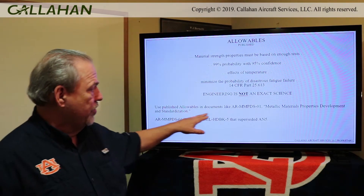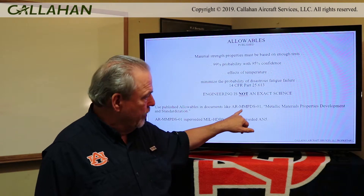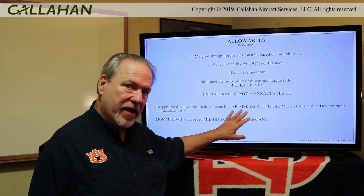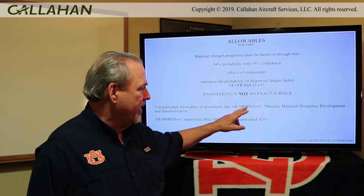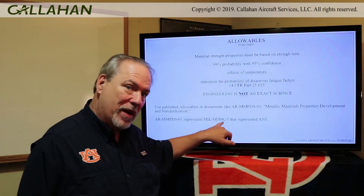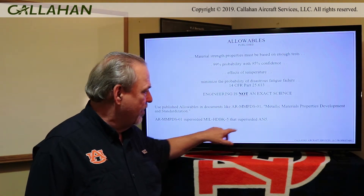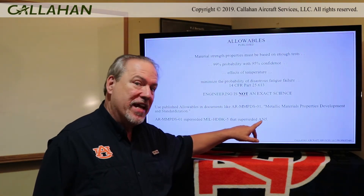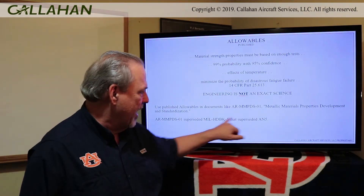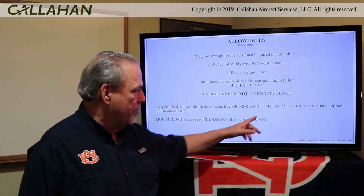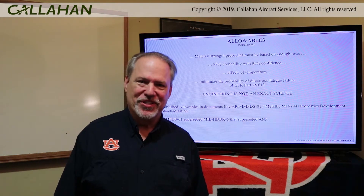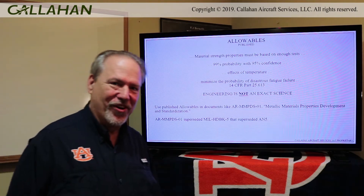We get our published allowables from documents like MMPDS-01, which is now held by the FAA, but it came from MIL-HDBK-5. My generation is all MIL-HDBK-5, and my father's generation might have used AN5. So this begot this, begot this, begot this — and before all that, someone just told you it was good, and therefore it was.